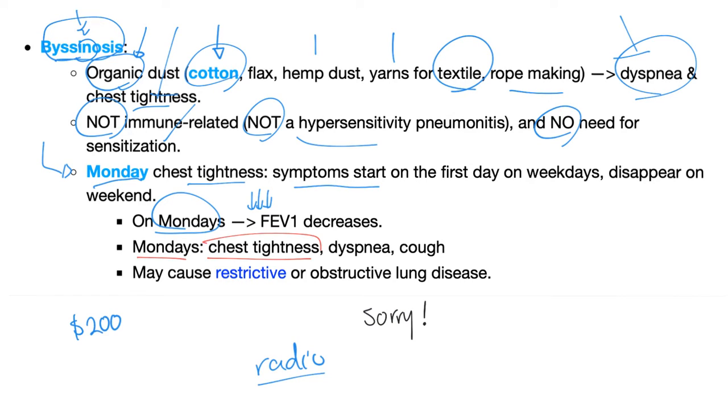On Mondays, patients have chest tightness, dyspnea, and cough. Byssinosis may cause restrictive — most of the time — or obstructive lung disease.